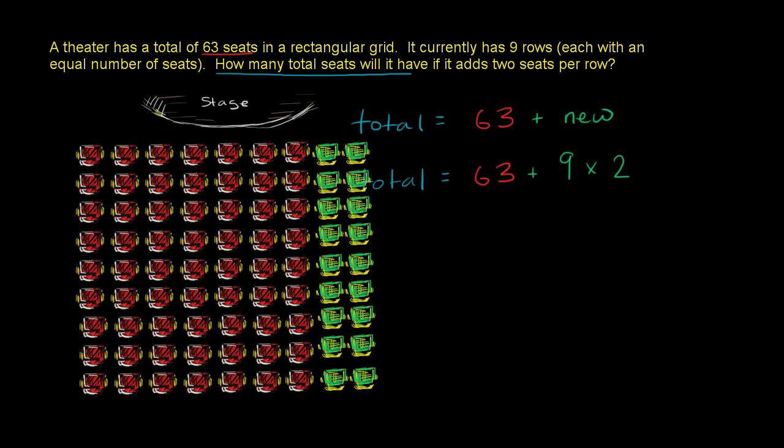So we're adding 18 new seats. So let me write this down. I covered up my old total. So total is equal to 63 plus 18. I had 63 seats, I'm now adding 18 seats. So my total number of seats is now going to be 63 plus 18.